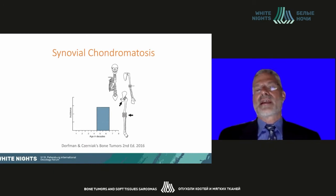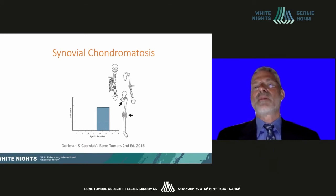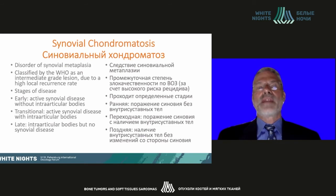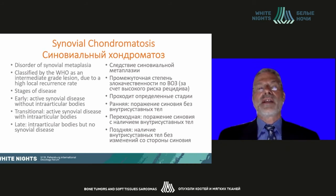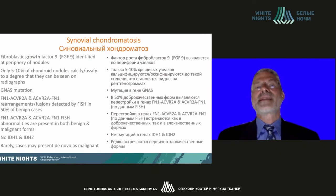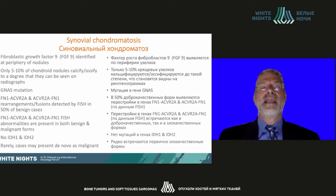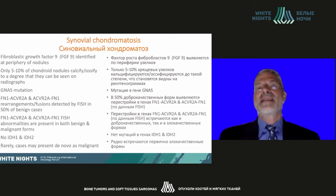Synovial chondromatosis has a classic age of 45 to 65 and involves pretty much any joint including the spine, but most commonly the hip, knee, and elbow. It's a disorder of synovial metaplasia, classified by the World Health Organization as an intermediate grade lesion due to high recurrence rate. Stages include active early with no intraarticular bodies, transitional active disease with intraarticular bodies, and late intraarticular bodies with no synovial disease. Fibroblastic growth factor 9 was identified at the periphery of nodules, and only 5–10% of chondroid nodules ossify. FN1-ACVR2A and ACVR2A-FN1 rearrangements and fusions can be detected by FISH in both benign and malignant forms. IDH1 and IDH2 are not found, and rarely these cases may present de novo as malignant.